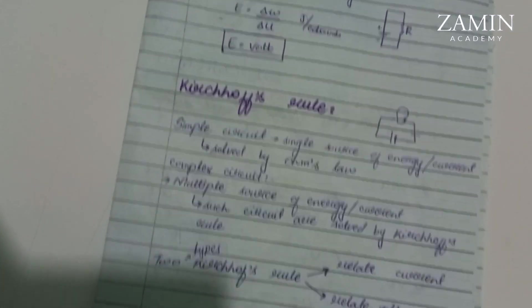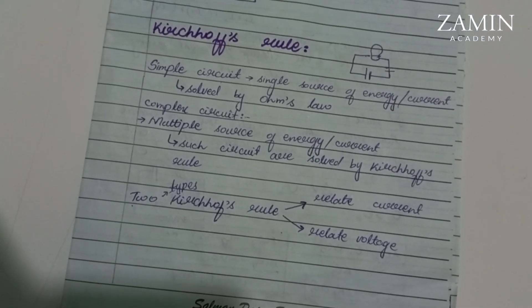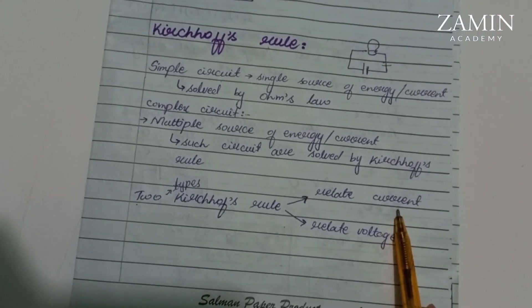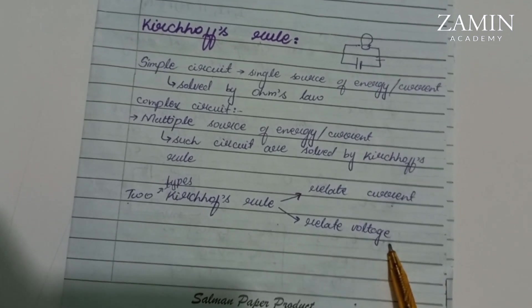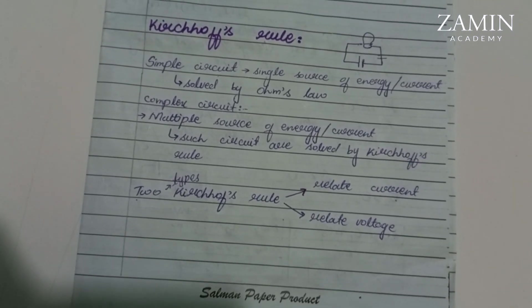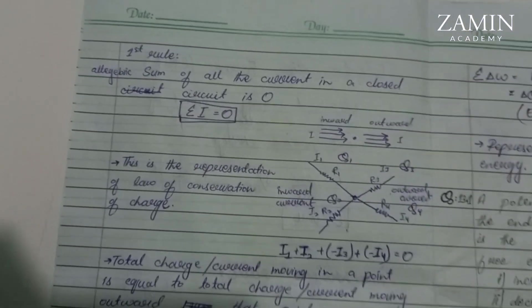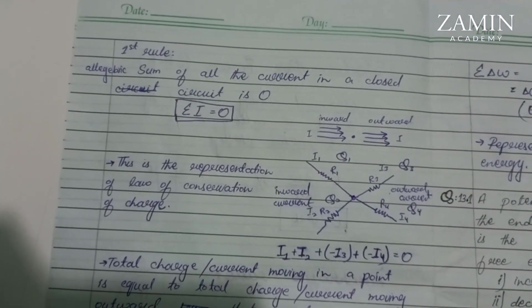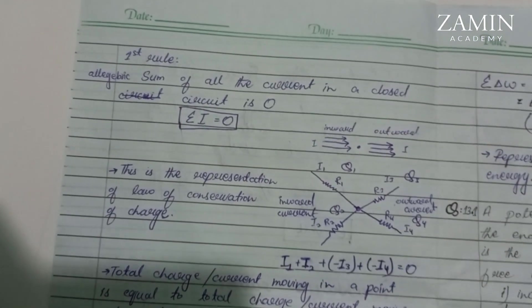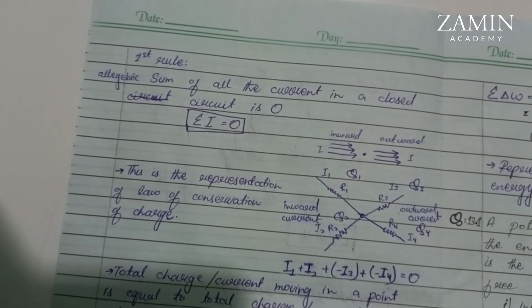There are two types of Kirchhoff's rules. One is related to current and the other is related to voltage or you can say the potential difference. The first rule of Kirchhoff is: algebraic sum of all the currents in a closed circuit is zero.